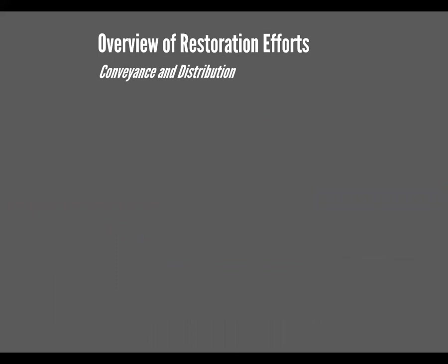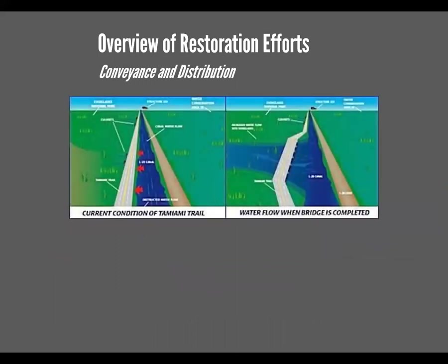Another project type is the conveyance and distribution of water. One really great example is removing impediments to flow — one of those is the Tamiami Trail. If you've ever driven from Naples or Tampa over to Miami, most likely you would have driven down US-41, the Tamiami Trail. Historically, Tamiami Trail was essentially a levee with a couple of culverts across the Everglades — a huge impediment to flow. Today we have bridging in certain portions of Tamiami Trail, allowing more water to flow into the Everglades and reducing that impediment.